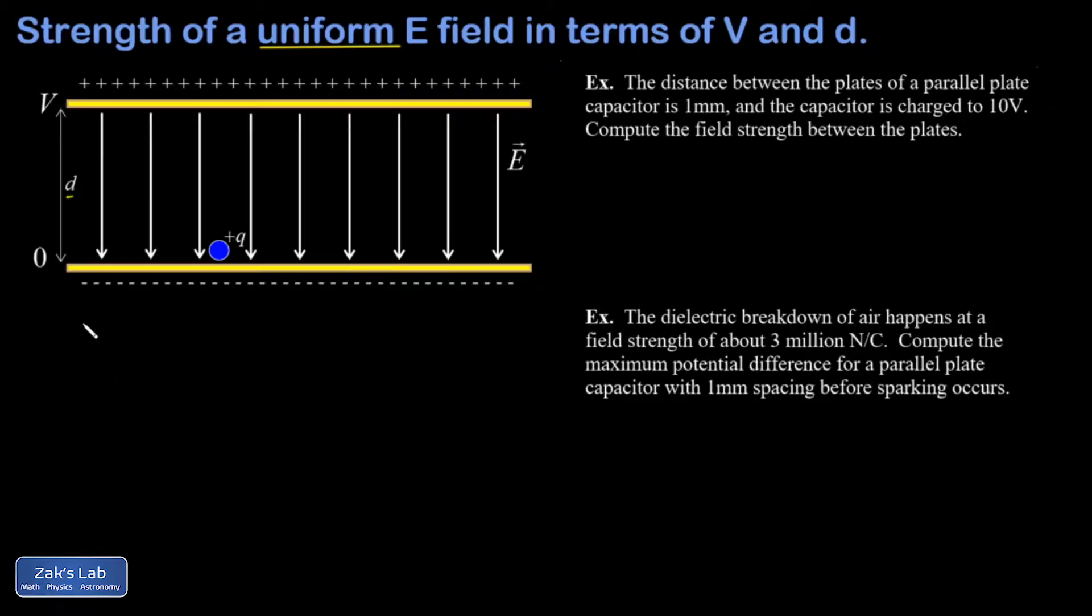A quick reminder: the general definition of electric potential is the potential energy per unit charge. This means the potential energy of a charge is given by Q times V, and the change in potential energy is given by Q times delta V.